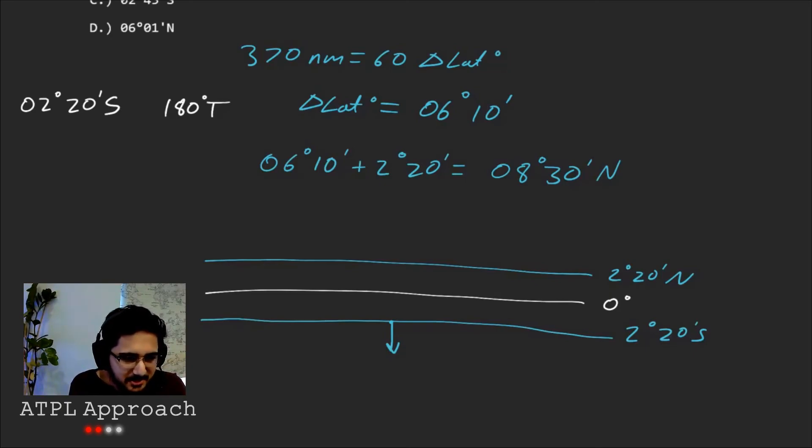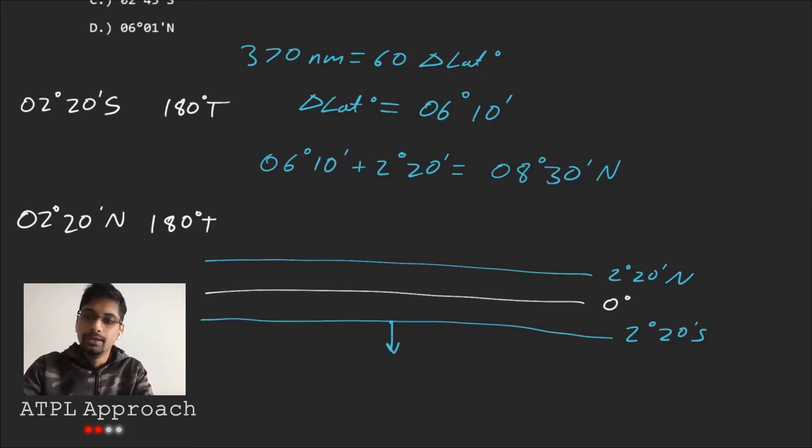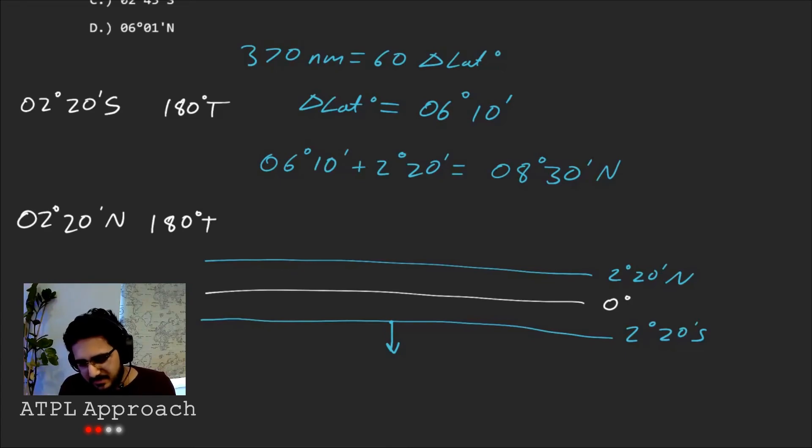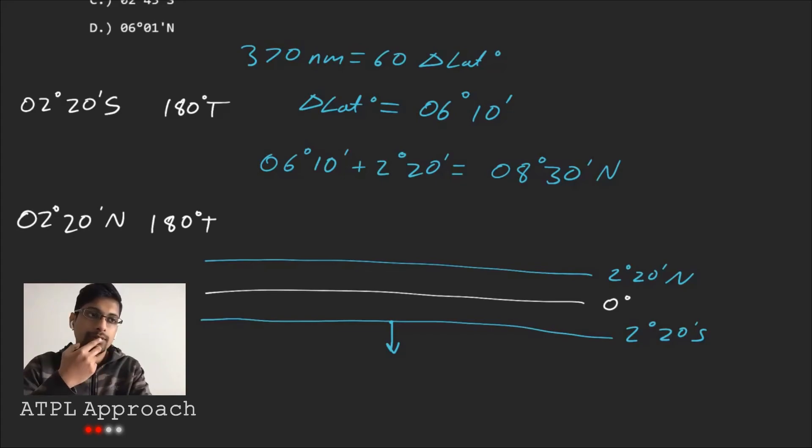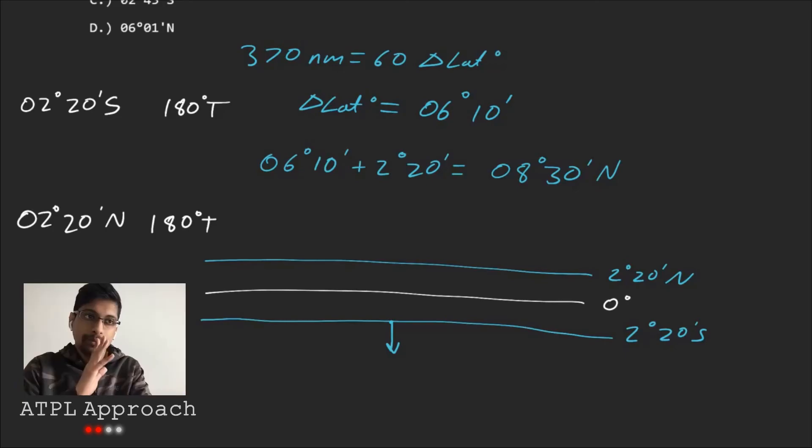But now, let's have another go. Let's try 2 degrees 20 minutes north, and going 180 degrees true. And that's our track. Okay. So it's starting in the northern hemisphere and going south. Yeah. So now it would be 6 degrees 10 minutes, if I'm not mistaken. So what sort of calculation would you do? How would you get to 6? So I'd take out... So the total change would be 8, 30. Okay. So I'll... Sorry. The 6, 10. Yeah. Would be the total change. Yeah. So out of 6, 10, I'd take out 2, 20. Okay.